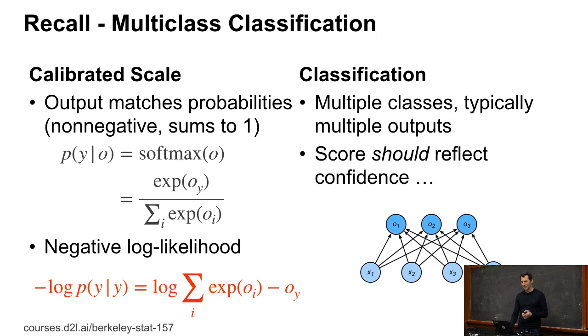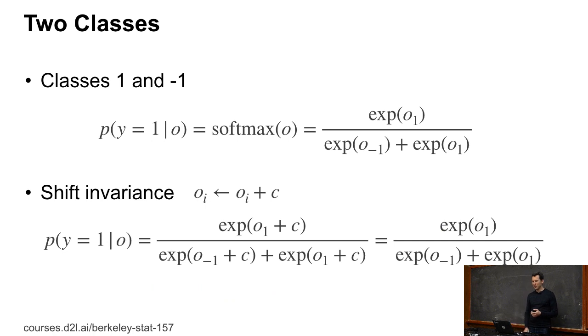Now, what if we only have two classes? Well, actually, if we only have two classes, as you I guess discovered, you have shift invariants. So you can add a constant to all the outputs and they get the same probabilities. So let's say I have classes one and minus one. P of Y equals one given O is e to the O_1 divided by e to the O_{-1} and e to the O_1. Now I could just add a constant to O_1 and O_{-1}. And so I get the same expression as before, but just now with the Cs added. And obviously I can pull those Cs out again by just dividing by all of that, they get the original expression. In other words, I have shift invariants under additions.